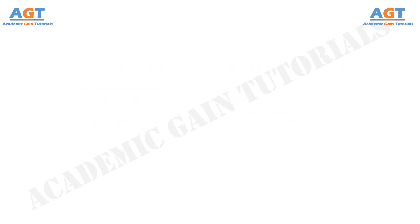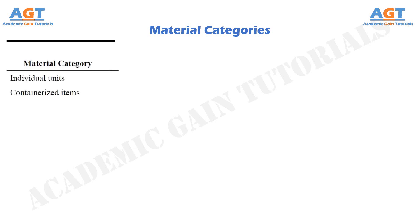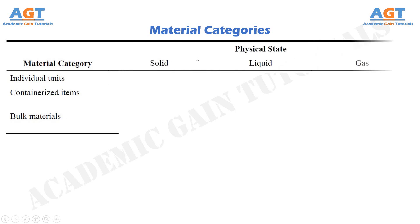Material categories. The materials in material handling can be divided into three main categories: individual units, containerized items, and bulk materials. Depending on the physical state of materials — whether solid, liquid, or gaseous — the different categories of materials can be handled differently.